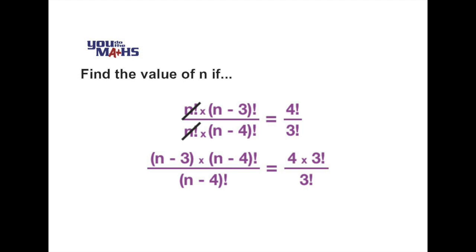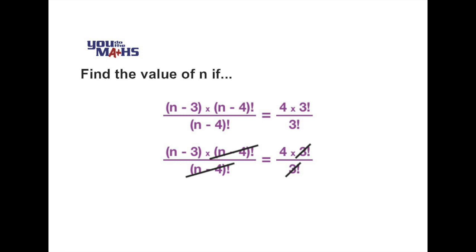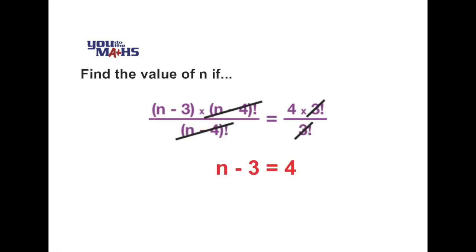Now that we've done that we can divide common terms. So the n minus 4 factorial disappears and the 3 factorial on the right hand side also is removed. So we end up with a much simpler equation which is n minus 3 equals 4. Of course we can solve that by adding 3 to both sides and we end up with n equals 7.